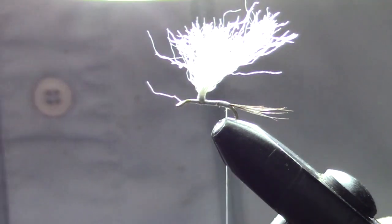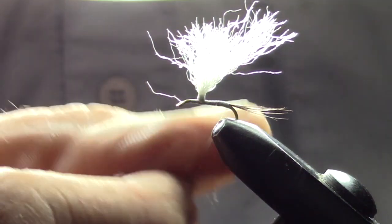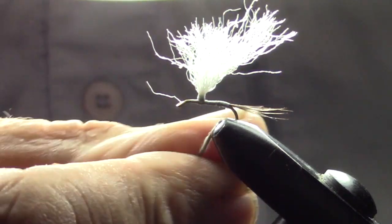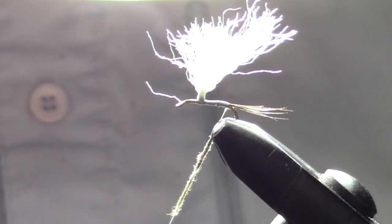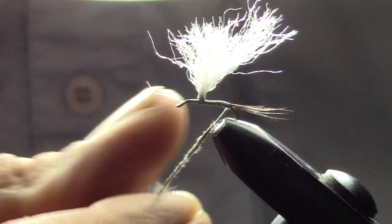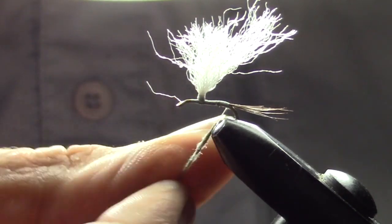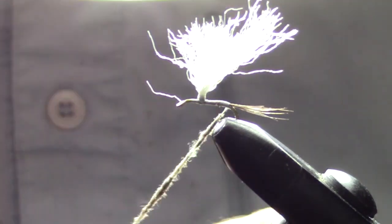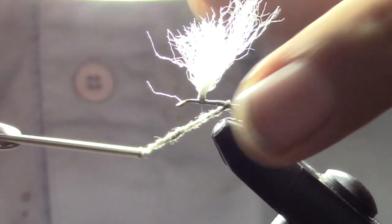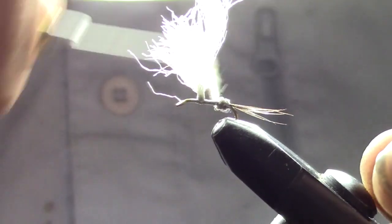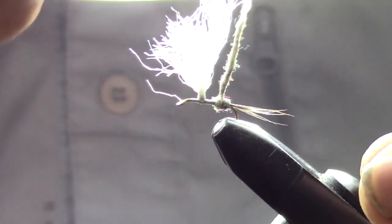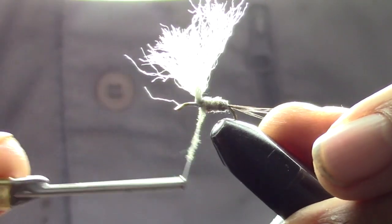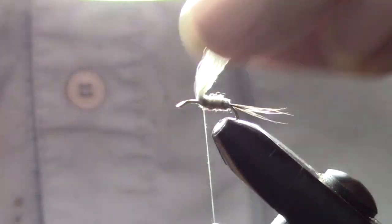Then we're going to use some mottled gray dubbing. It's got a little bit of different colors in it—light gray with a couple speckles of black and dark gray. Then we're just going to wrap it forward, and I make a pretty hefty body of it because I want them to see it as a fat fly ready to eat.